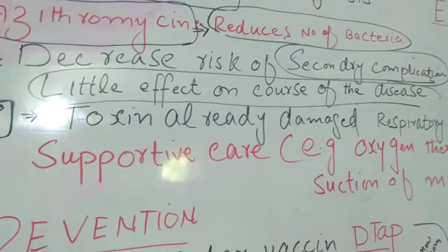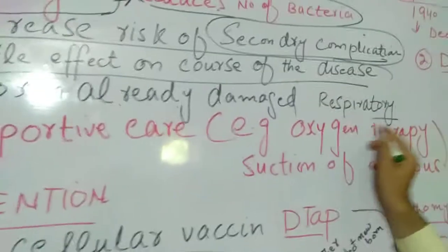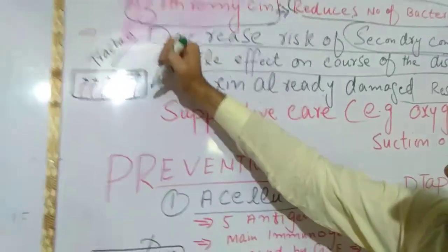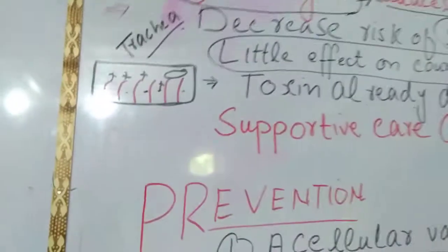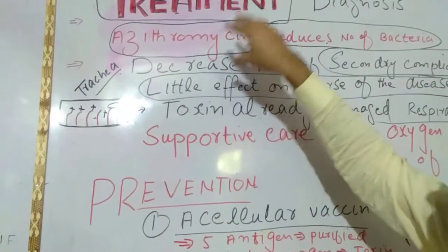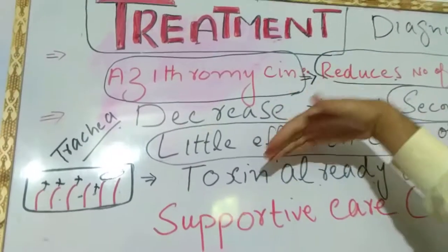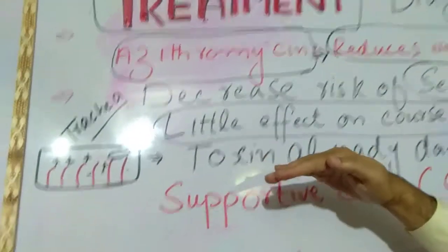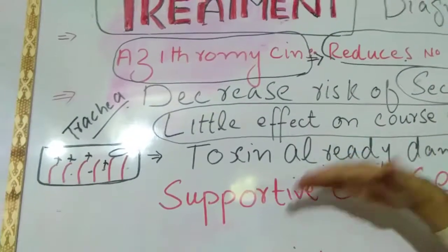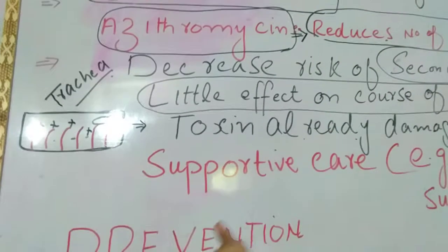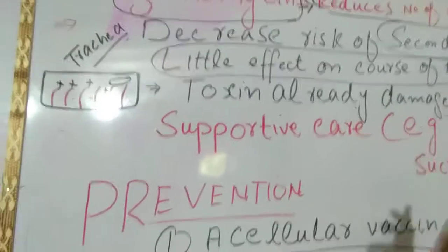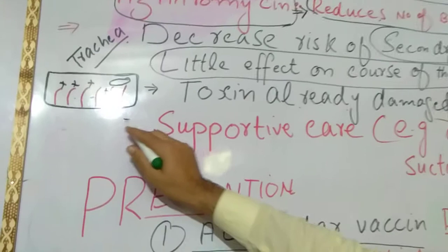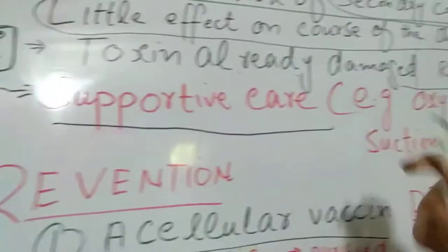There is little effect on the course of the disease because the toxin has already damaged the respiratory tract. The bacteria produced toxin which has already damaged the ciliated cells of the trachea. So when you prescribe azithromycin, it reduces the number of bacteria and prevents secondary complications, but has little effect on the duration of the disease because the toxin has already damaged the epithelium and ciliated cells.